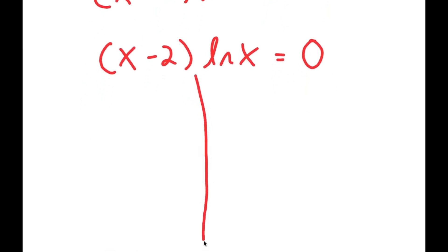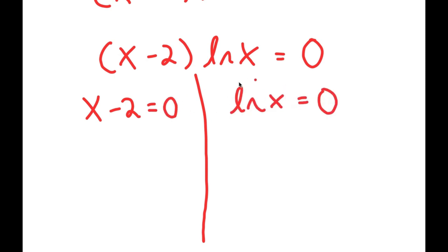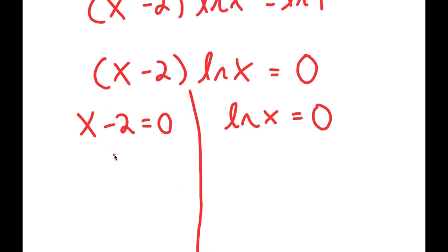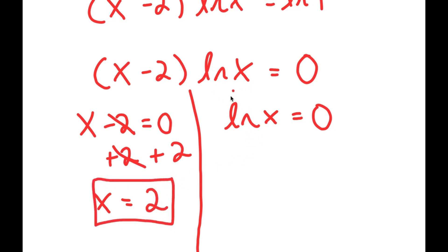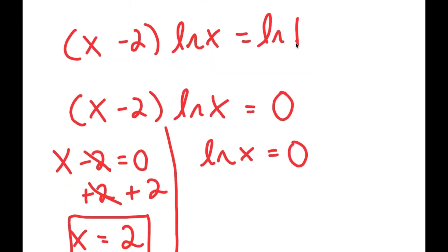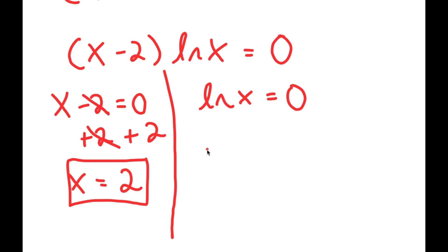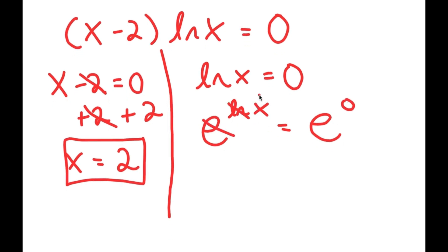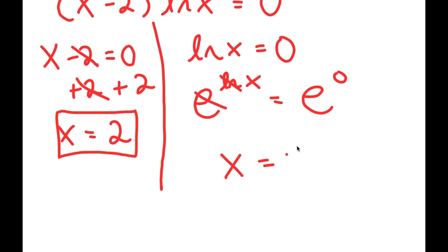From here I get two equations. The first is x minus 2 equals 0, and the second is ln of x equals 0. For the first equation, I add 2 to both sides, so x is equal to 2. For the second equation, ln of x equals 0 — this is asking: ln of what equals 0? We can take e to the power of both sides: e to the power of ln x equals e to the power of 0. Since e and ln cancel out, I get x equal to e to the power of 0, which is 1.